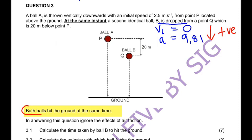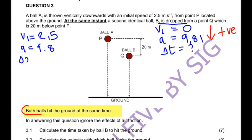To use an equation of motion we generally need three quantities, and then solve for the fourth. However, for ball B we've only got two quantities, so we have a problem. Let's look at ball A: its initial velocity is 2.5 m/s and its acceleration is 9.8 m/s².